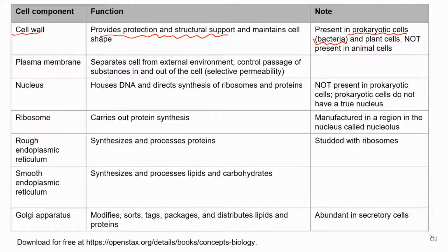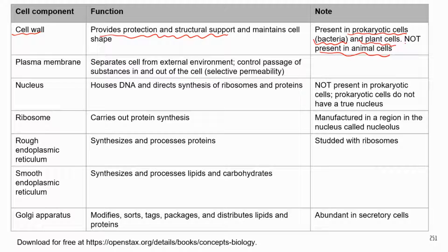The cell wall is also present in plant cells. If you look at leaf cells or onion cells, they all have cell walls. The cell wall is not present in animal cells, so animal cells have a more flexible shape because there's no rigid cell wall.